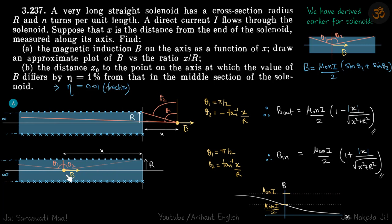Now for the point x inside the solenoid. In this case theta 1 will be pi by 2 just like before. Theta 2 this time will be positive and its value is tan inverse x by r. We will put the values theta 1 theta 2 here and get mu naught ni by 2, 1 plus x by root x square plus r square.